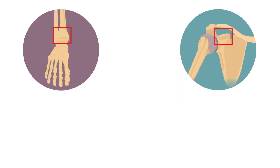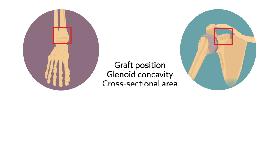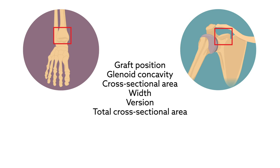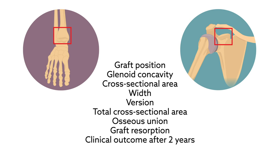Two fellowship-trained musculoskeletal radiologists assessed graft position, glenoid concavity, cross-sectional area, width, version, total cross-sectional area, osseous union, and graft resorption at a follow-up of 8 months. Clinical outcome in terms of instability was also assessed after two years.